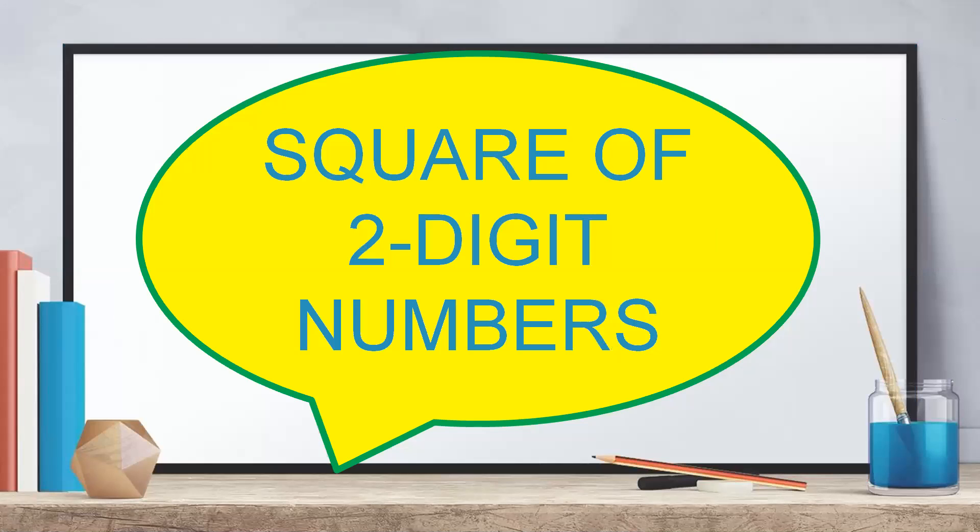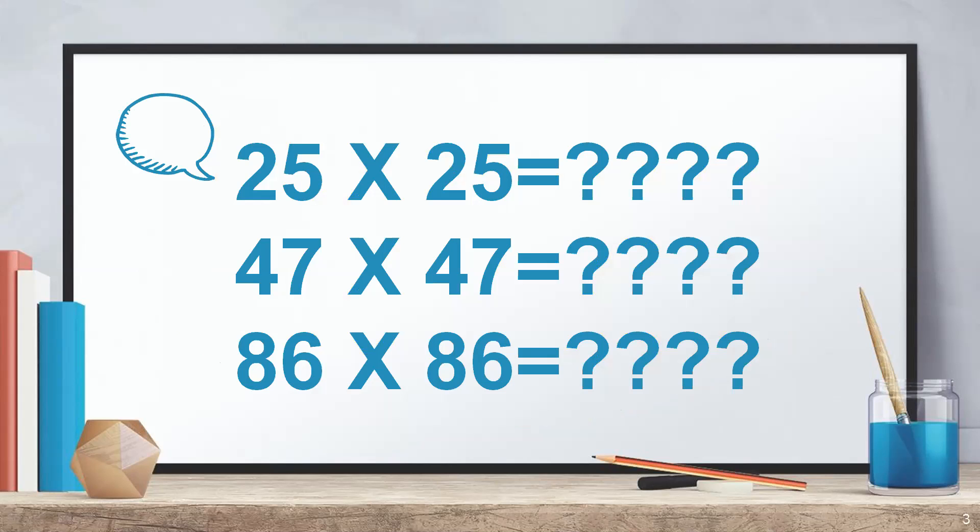In this video, we will discuss three methods, three easy methods to find out square of two-digit numbers. Out of that, the first method can be applied only to numbers ending with 5. The second one can be applied only to numbers which are near 50. Whereas the third method can be applied to find out square of any two-digit numbers. So after watching this video, you can find out the answer of these squares in three seconds or less. Hope you all are excited to see what are those techniques which will make you solve these problems as quick as possible.